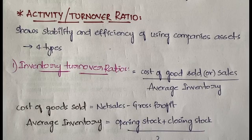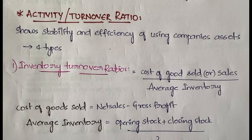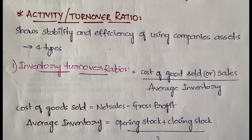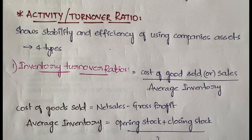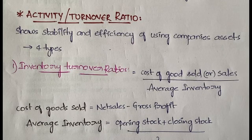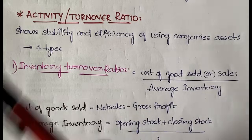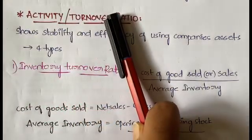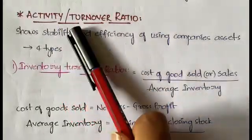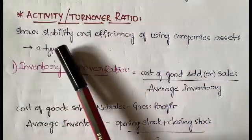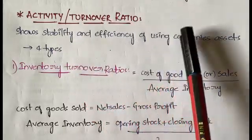Hello everyone, welcome back to my YouTube channel Trouble Free. In today's video I'm going to explain activity ratio in the subject of managerial economics and financial analysis. Till now we have learned about profitability ratios and liquidity ratios. We actually have a total of five types of ratios, and this is the third type. Activity ratio is also called as turnover ratio — both mean the same.